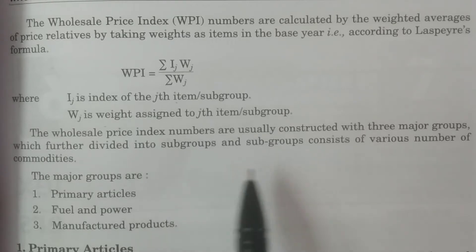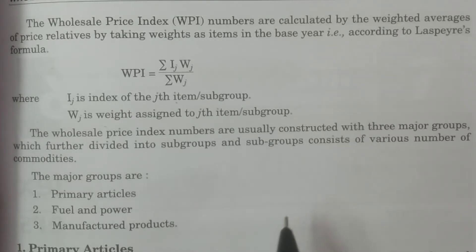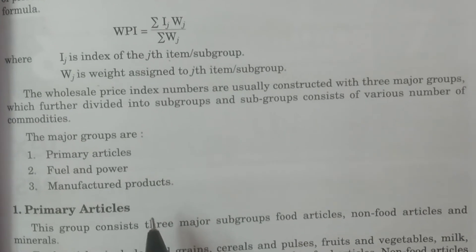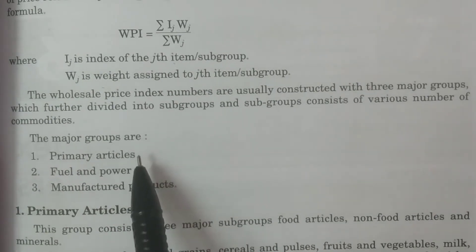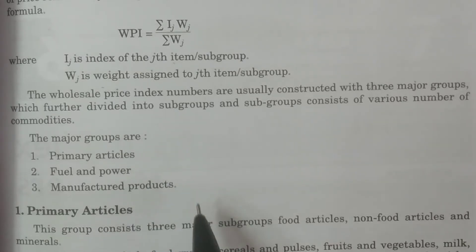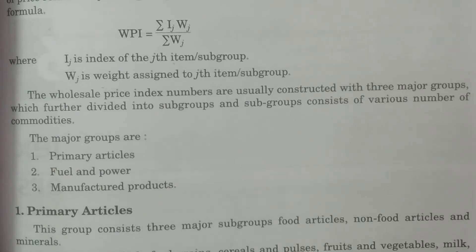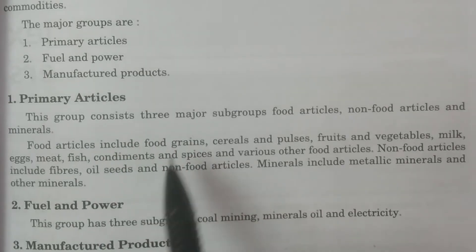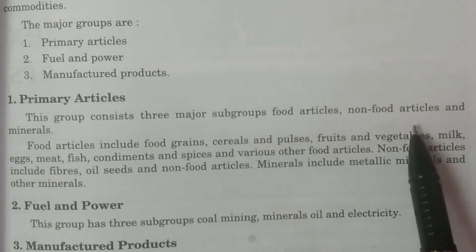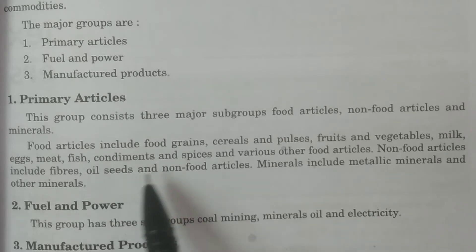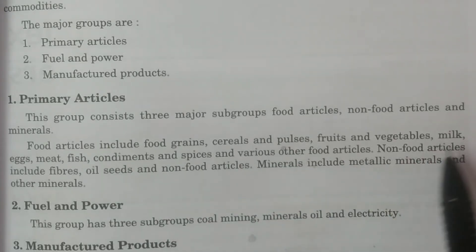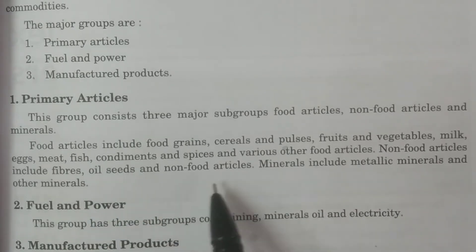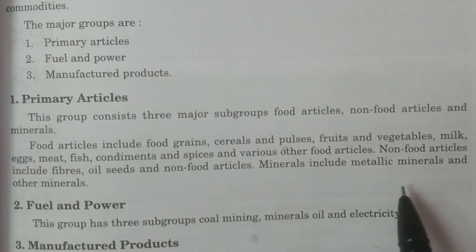The Wholesale Price Index numbers are constructed with three major groups, which are further divided into subgroups consisting of various commodities. The three major heads are: Primary Articles, Fuel and Power, and Manufactured Products. Primary Articles has three major subgroups: Food Articles, Non-Food Articles, and Minerals. Food Articles include grains, cereals, pulses, fruits, vegetables, milk, eggs, meat, and fish. Non-Food Articles include fibers and oil seeds. Minerals include metallic minerals and other minerals.